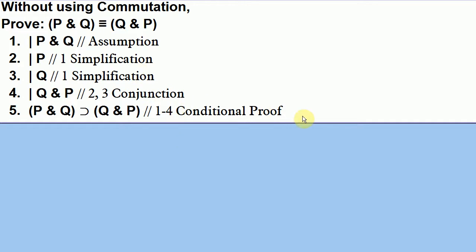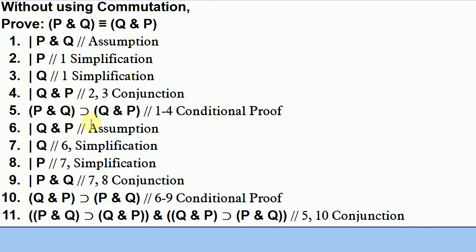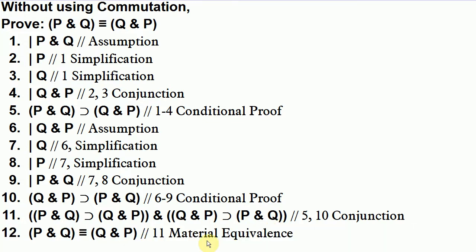We use the rule of conditional proof to derive if P∧Q then Q∧P on line five. Now we do the reverse: we assume Q∧P, simplify to get Q and P on separate lines, use conjunction to get P∧Q, and close off the conditional proof to derive if Q∧P then P∧Q. With both conditionals proved, we conjoin them on line 11, and use the rule of material equivalence to derive their equivalence with each other.